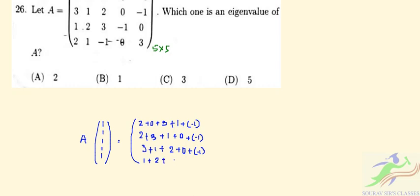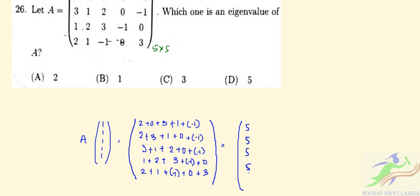Let's see. 2 + 3 + (-1) + 0 and the last row is 2 + 1 + (-1) + 0 + 3. So if we do this, the first row will be 5, 5, 5, 5. So if we take 5 out of it, we will have 5 of. So here the eigenvalue of A is nothing but 5.